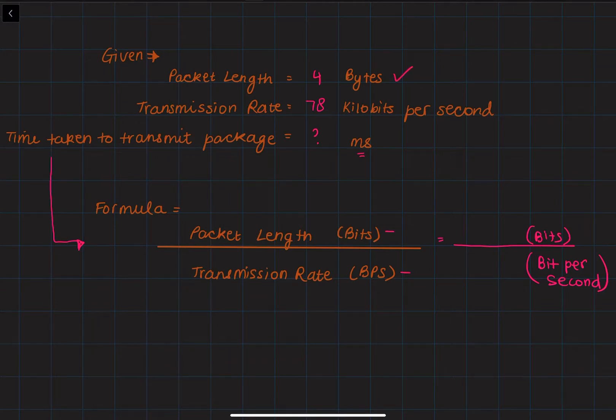we will first convert our 4 bytes into bits by multiplying by 8. Then we will convert 78 kilobits per second to bits per second by dividing by 0.001.